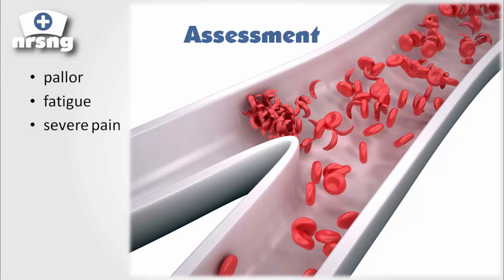As you can see here, we have our normally shaped RBCs, and here would be a misshapen sickle cell RBC. These sickle cells cause clotting and coagulation. Because they're not shaped correctly, they don't flow like they should — this causes a big pile-up — so RBCs are not able to pass through. That can cause pallor, fatigue, and severe pain.